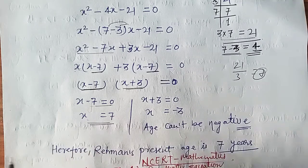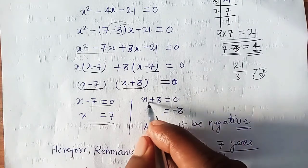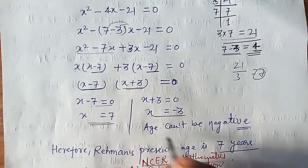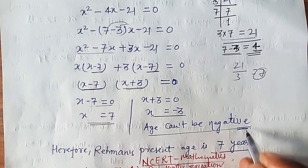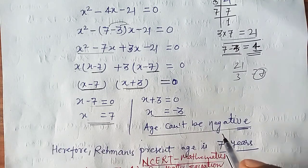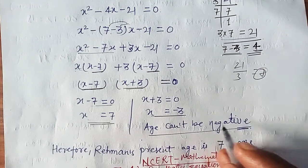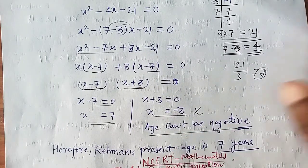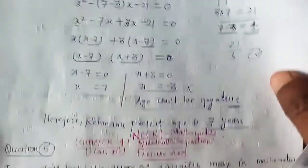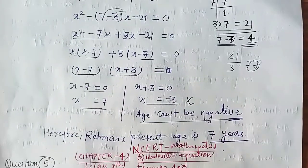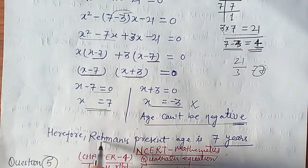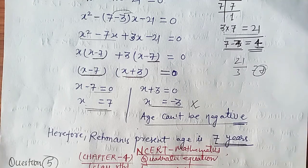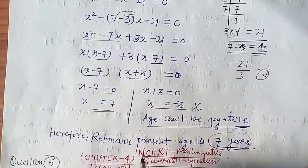Setting each factor to zero: x minus 7 = 0 gives x = 7, and x plus 3 = 0 gives x = minus 3. Since age cannot be negative, we reject x = minus 3. Therefore, Rehman's present age is 7 years.